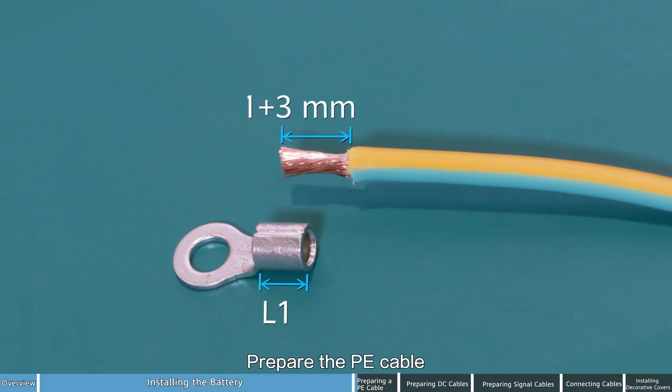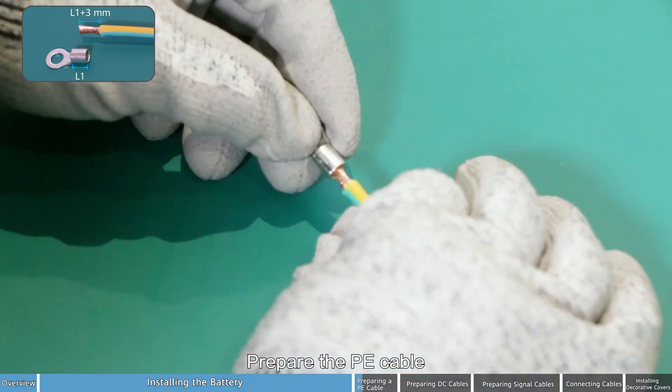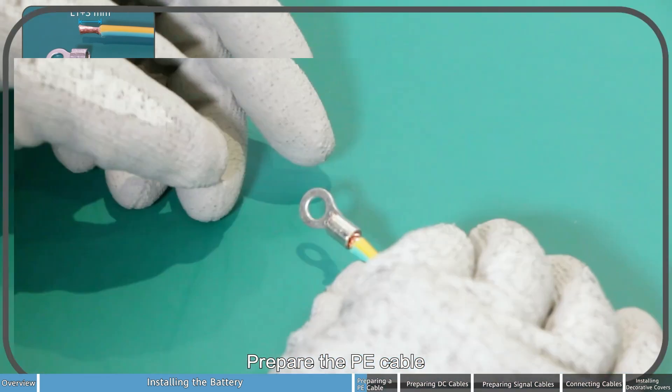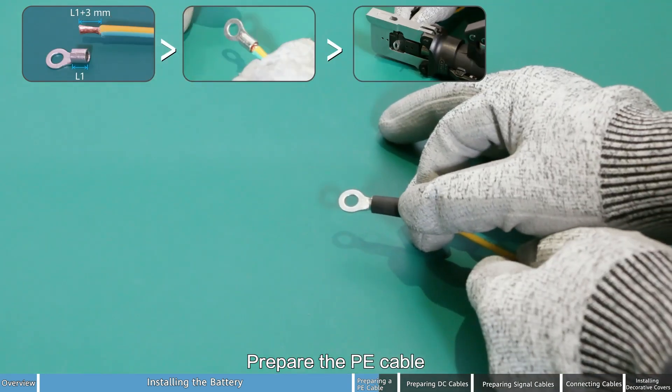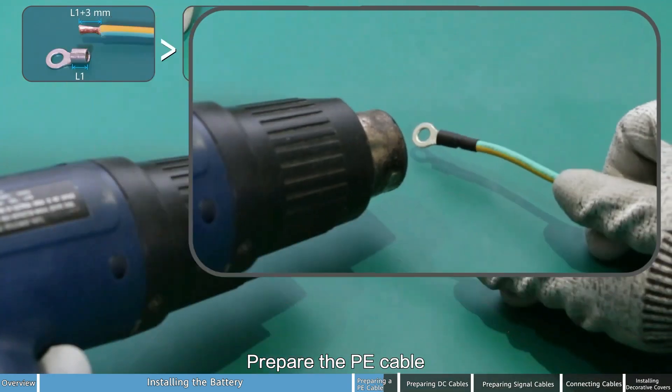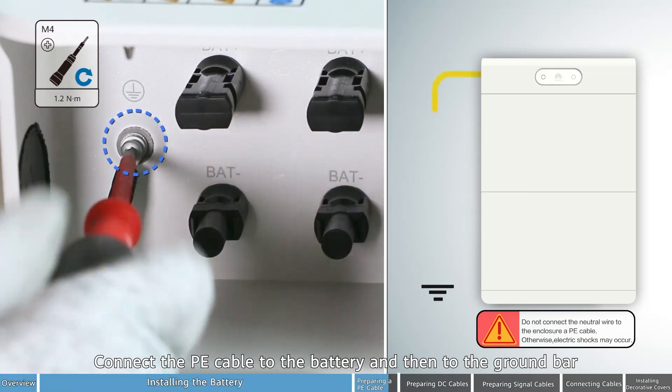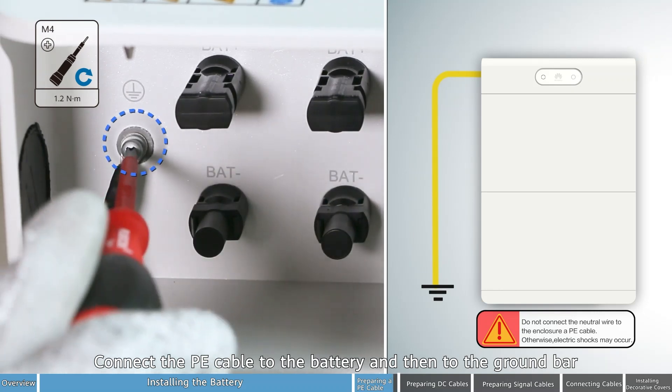Prepare the PE cable. Connect the PE cable to the battery and then to the ground bar.